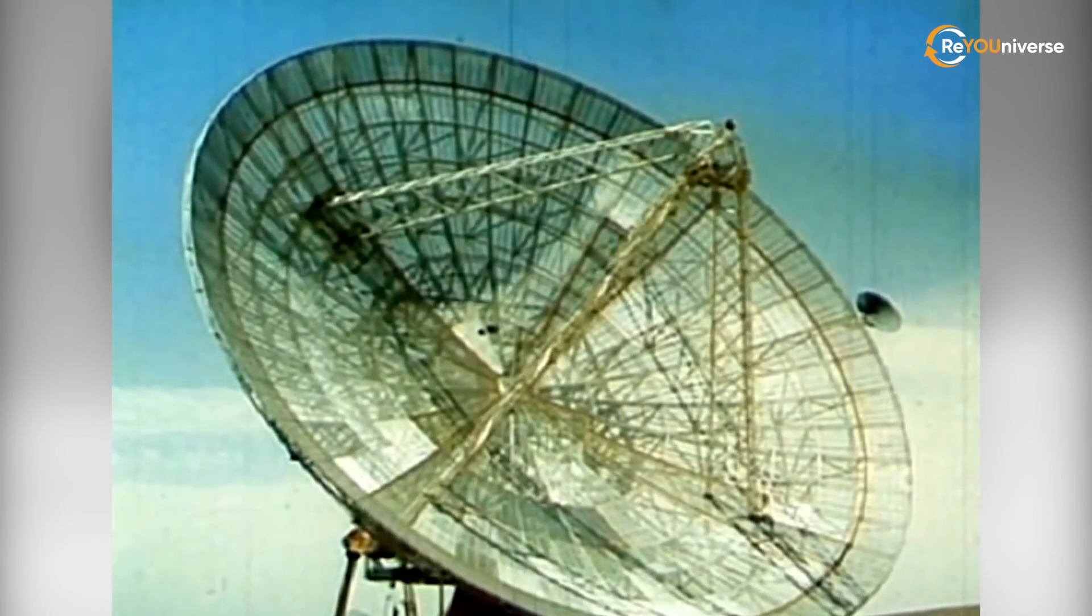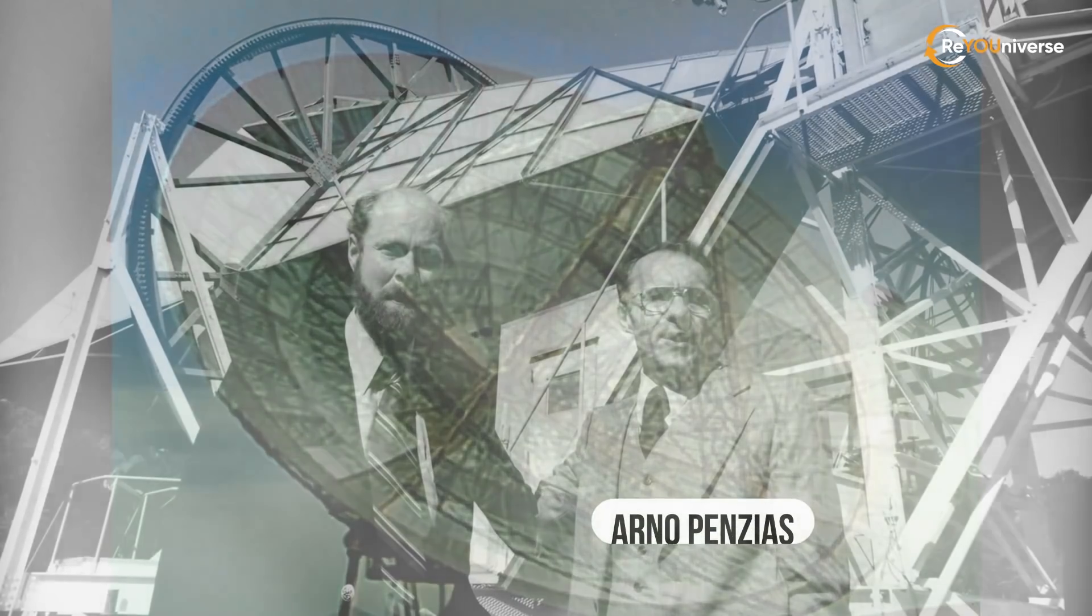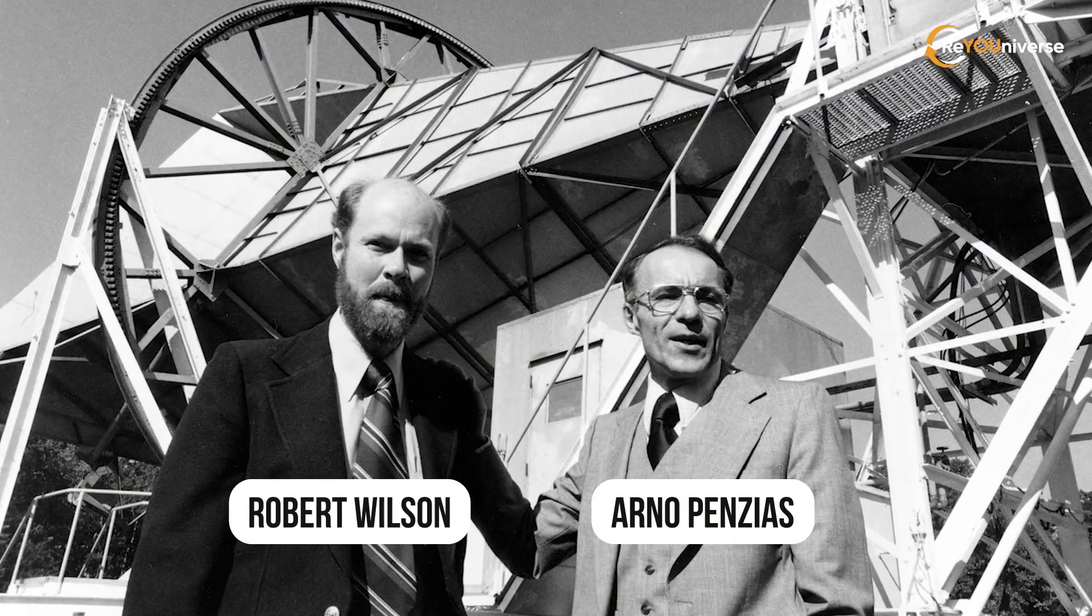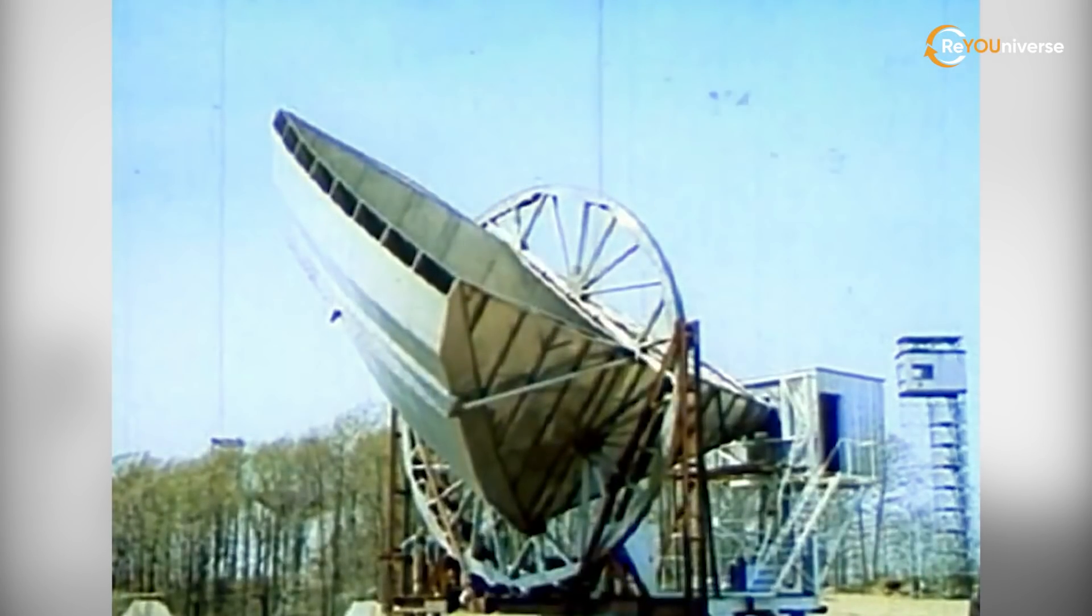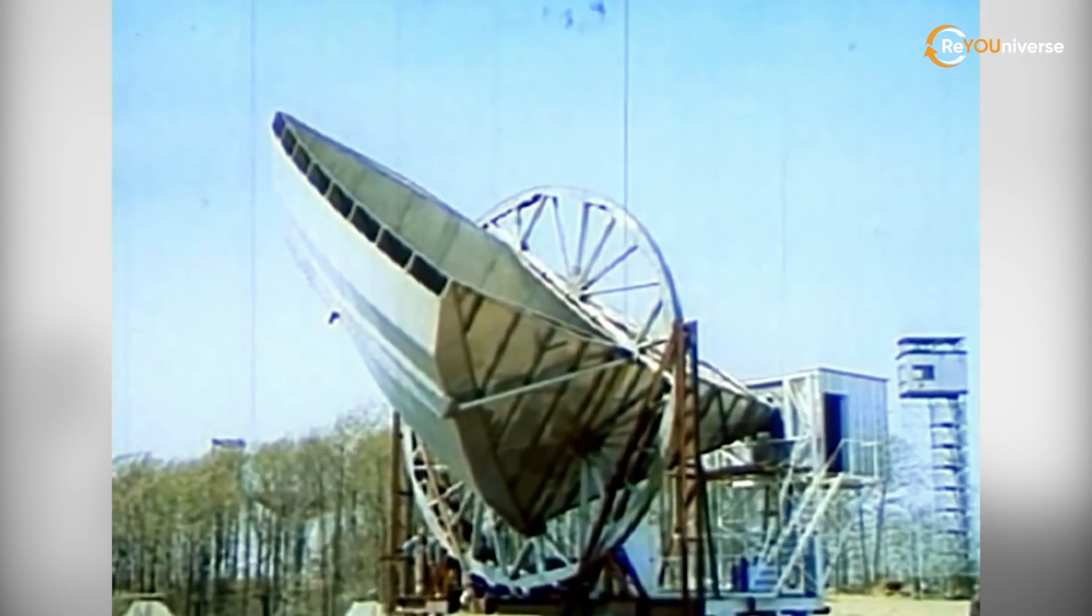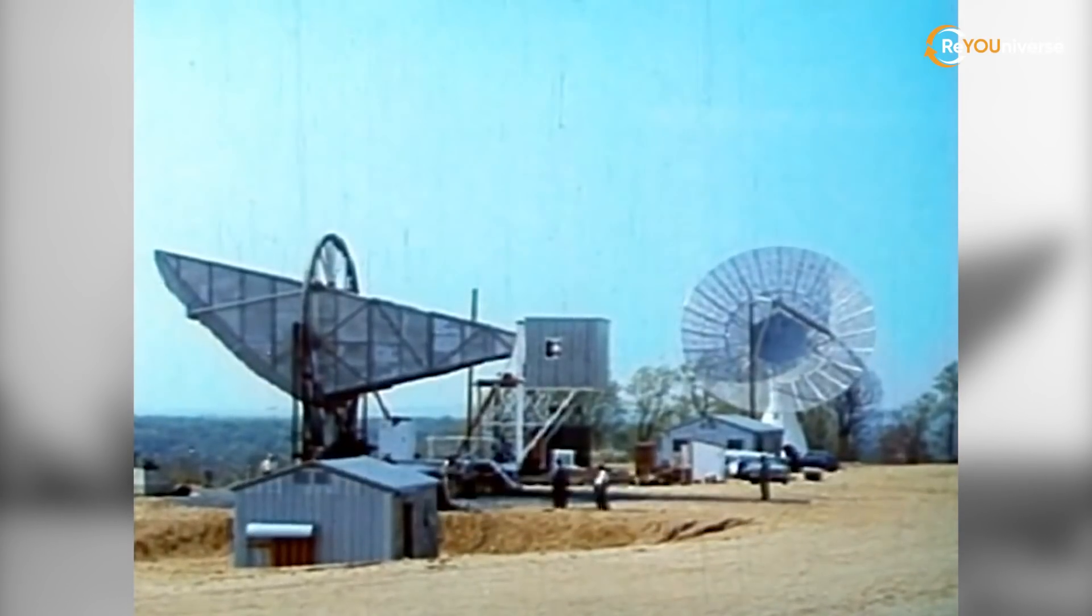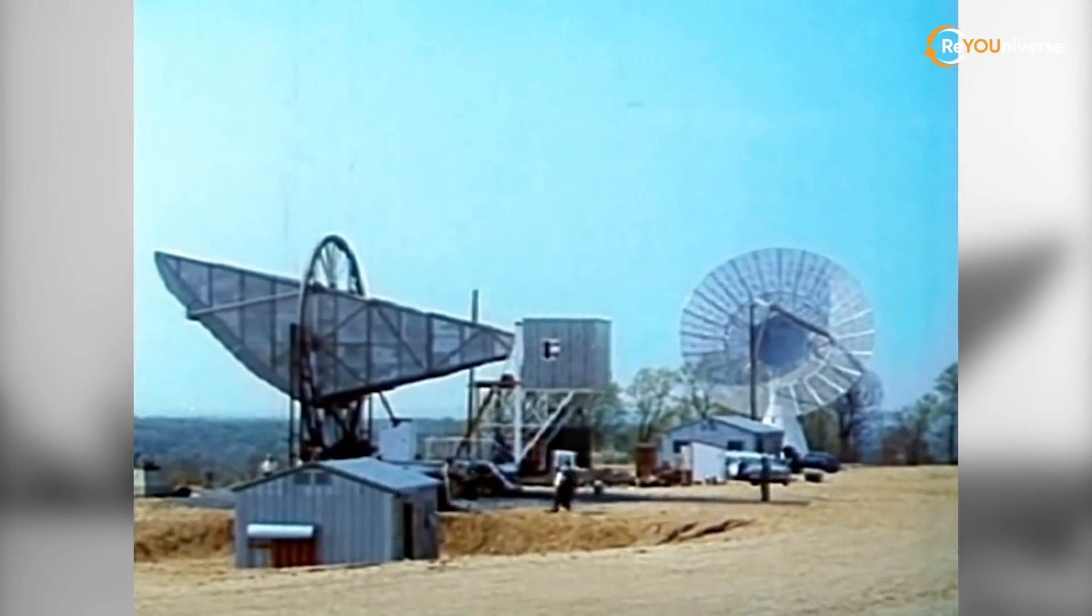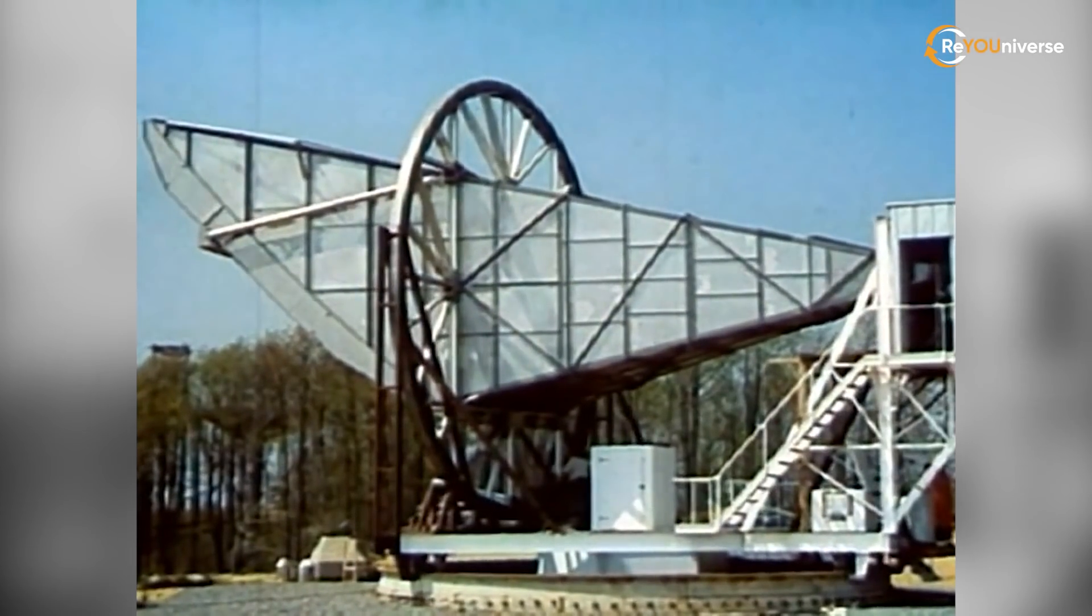This radiation was accidentally discovered in 1965 by radio astronomers Arno Penzias and Robert Wilson at Bell Laboratories. They used a radio antenna built in the early 1960s to work with one of the first echo-communication satellite systems. The satellites were outdated. They safely burned down in the oceans, and scientists got a hold of the antenna.